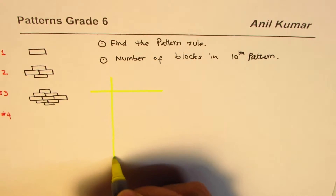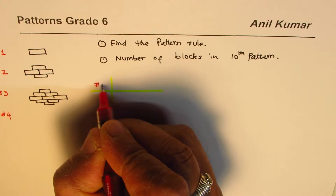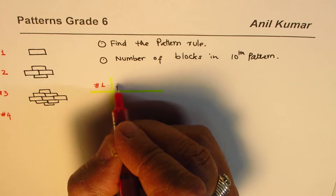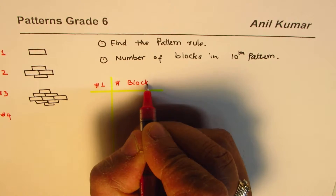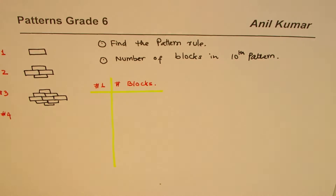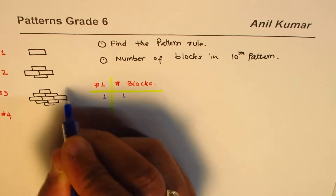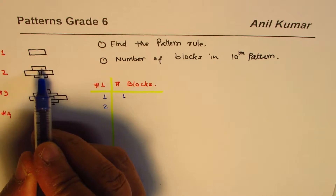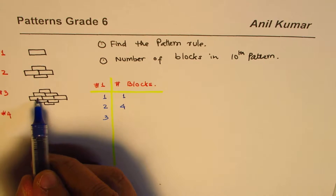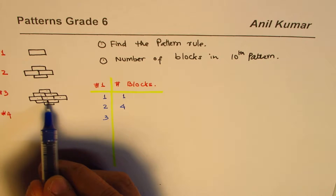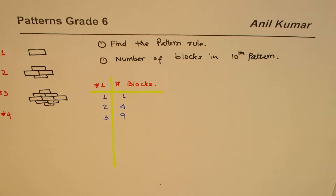We can count the number of bricks for the three designs given and see how the pattern grows. We write the pattern numbers on one side and the number of blocks on the other. For the first one we have just one block; for the second, one, two, three, four — so four blocks; and for the third, counting gives us nine blocks.